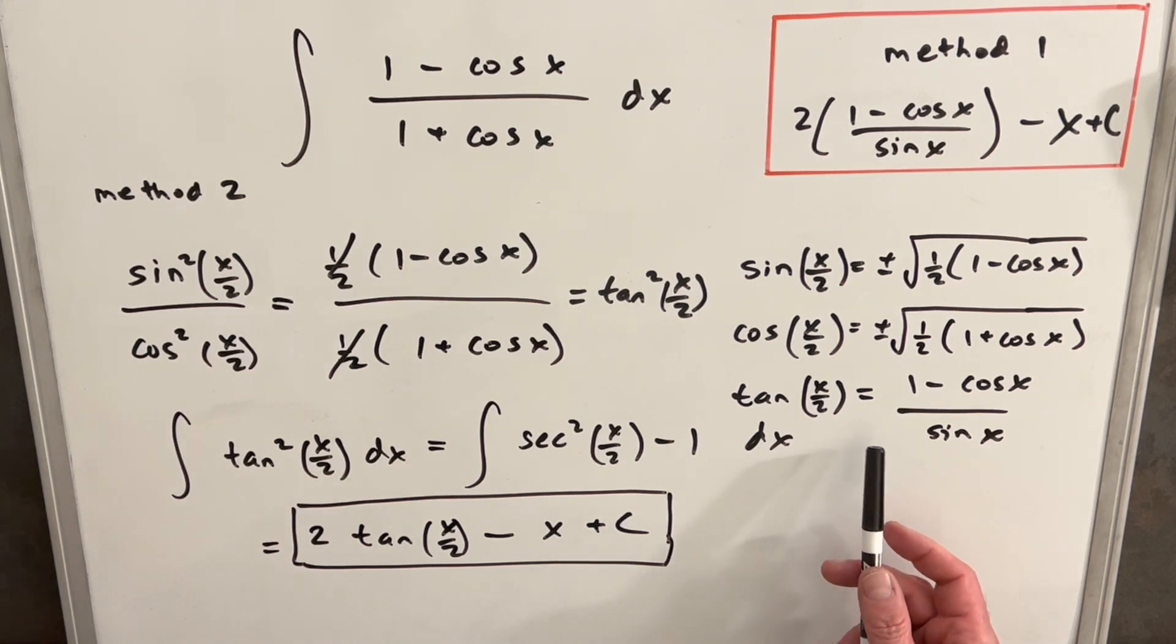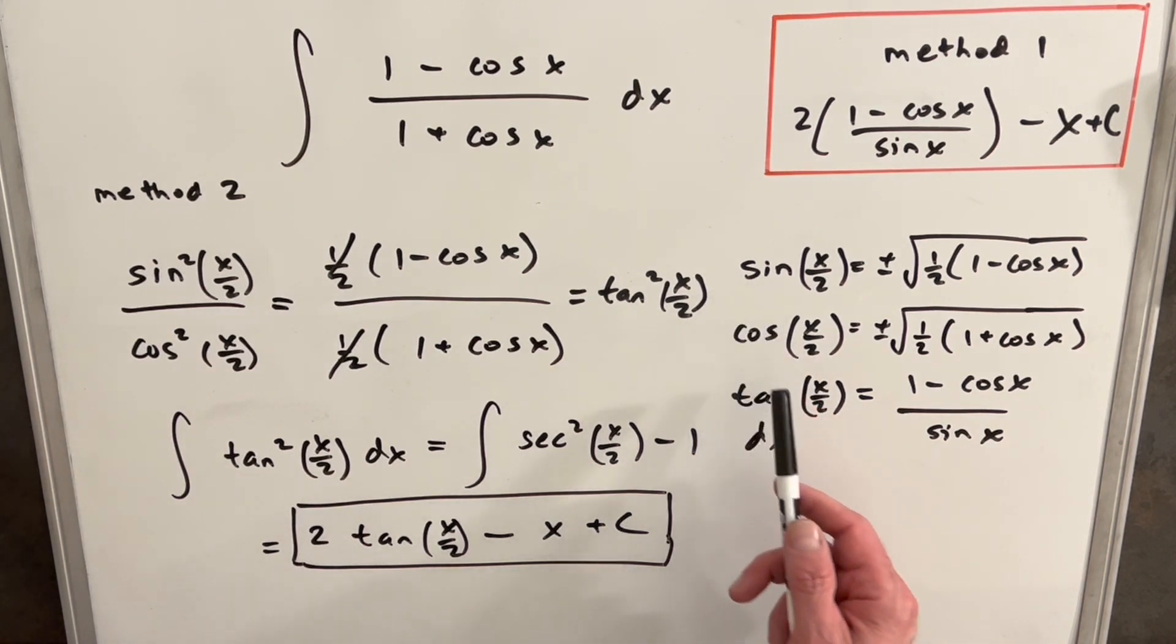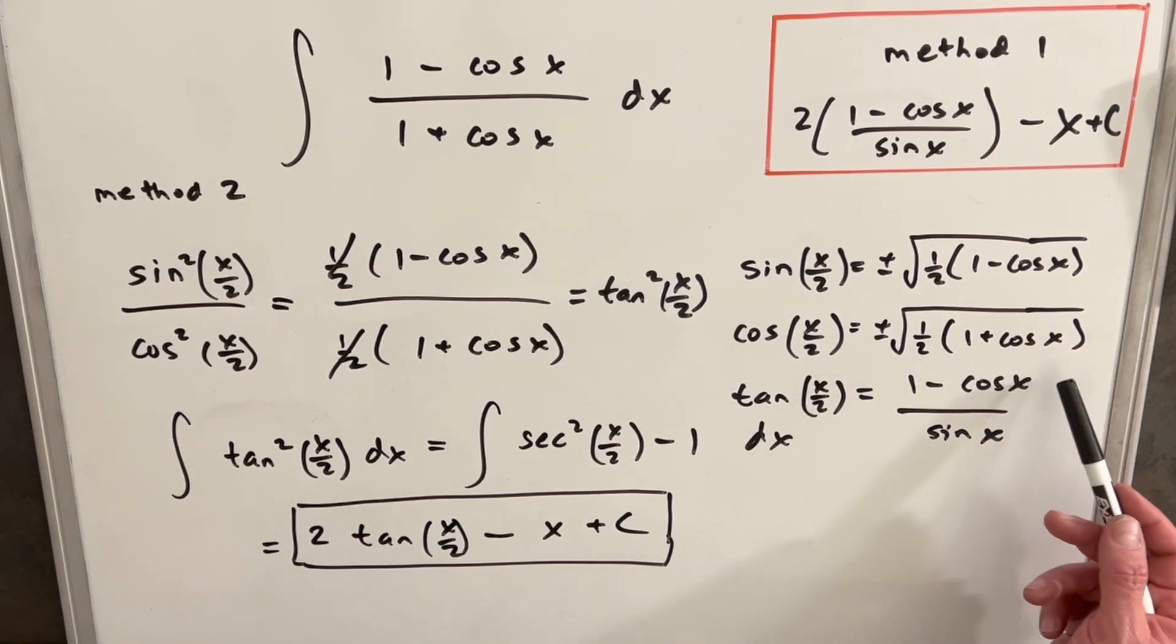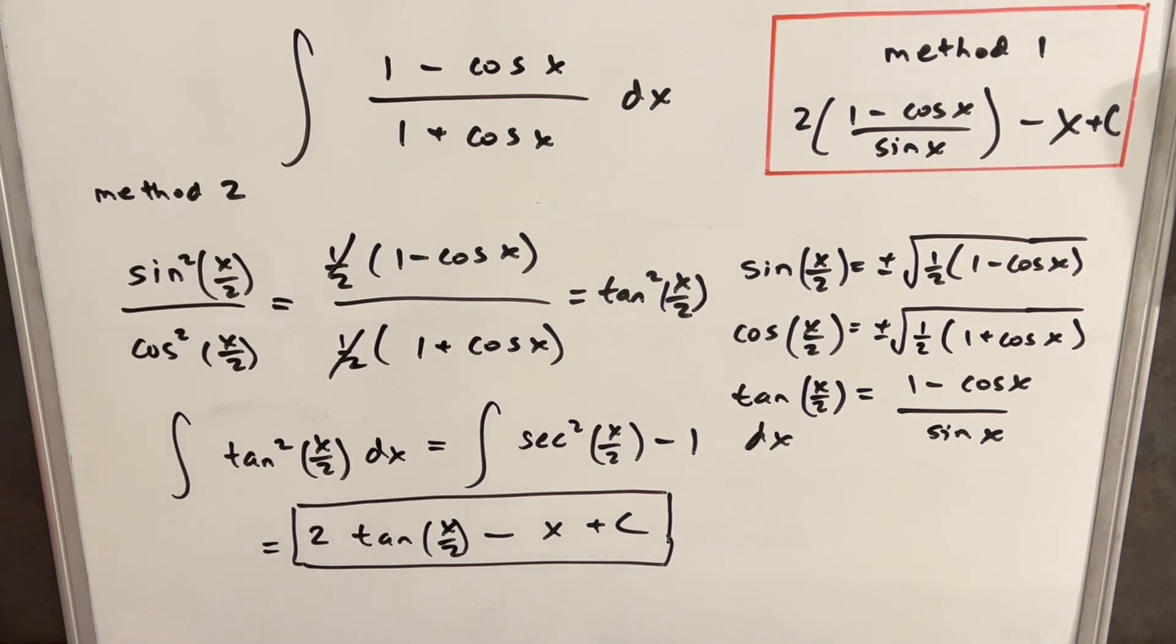I did another video deriving this, but in short, you just divide sine by cosine, and then the halves cancel, you multiply by the conjugate, and you essentially come up with this. So I can provide a link to that other video, but we could also write this as 2 times (1 minus cos x) over sin x, using this identity, minus x plus c.